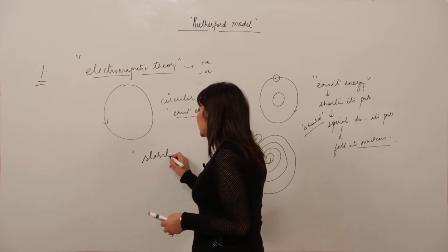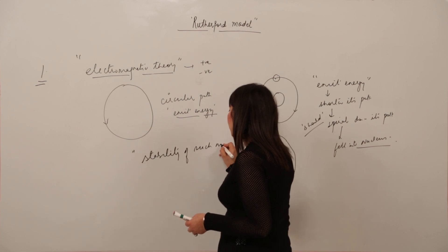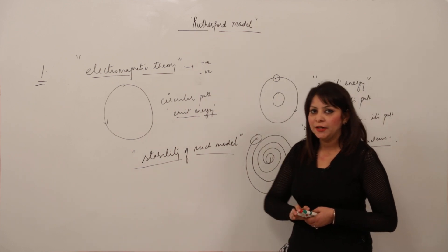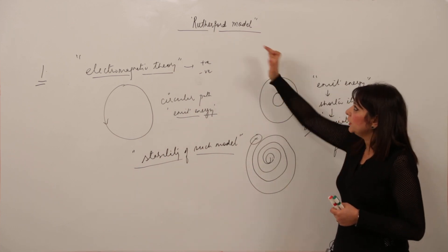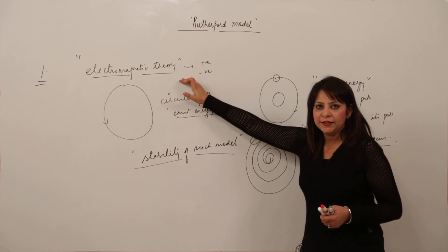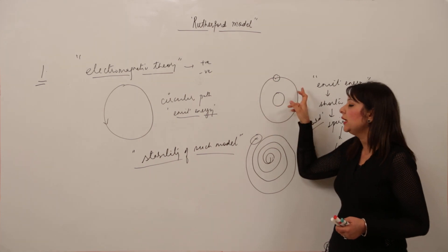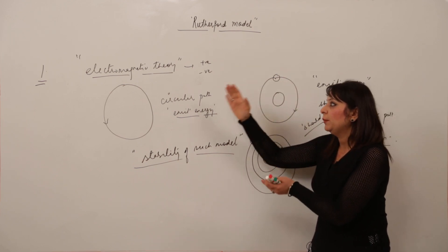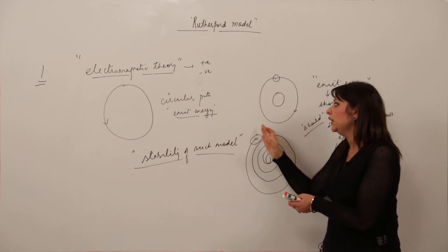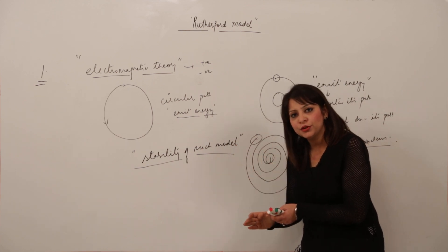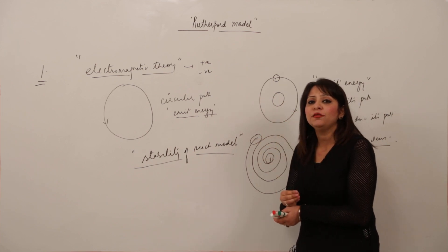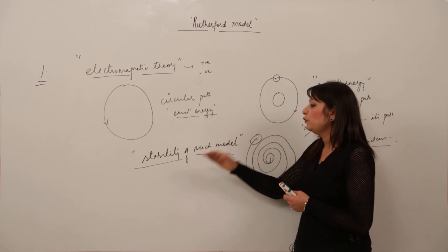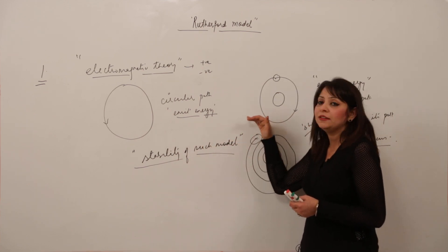So Rutherford failed to explain the stability of his model — this was the main drawback. The Rutherford model failed because, according to electromagnetic theory, any charged particle revolving should emit energy. Applying this to the negatively charged particle in Rutherford's model: it should emit energy, shorten its path, spiral down into the nucleus in a very small time. But we haven't seen this negatively charged particle in the nucleus, so Rutherford failed to explain the stability of his model, which he compared to the solar system.